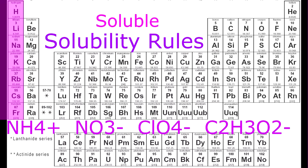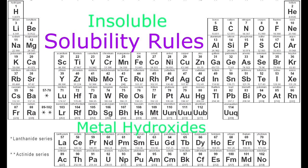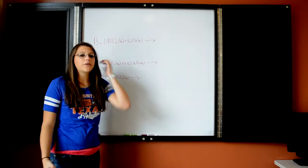Chloride, bromide, and iodide are soluble except with silver, lead, mercury, and copper. Sulfate is usually soluble except with calcium, strontium, barium, silver, and lead. Metal hydroxides are insoluble except for the strong bases listed. Carbonate and phosphate are usually insoluble except with column 1 or ammonium. Sulfide is usually insoluble unless it's with column 1, column 2, or ammonium.